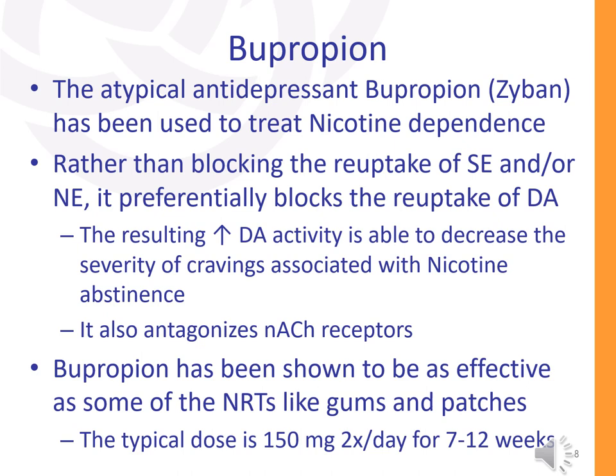The atypical antidepressant bupropion, trade name Zyban, has been used to treat nicotine dependence as well. Its mechanism of action is different from the typical antidepressants. Rather than blocking the reuptake of serotonin and/or norepinephrine, it preferentially blocks the reuptake of dopamine. Increasing dopamine activity by reuptake blockade appears to decrease the severity of cravings associated with nicotine abstinence. It also antagonizes nicotinic acetylcholine receptors, unlike other medications. Bupropion has been shown to be as effective as some of the other NRTs, like gums and patches.